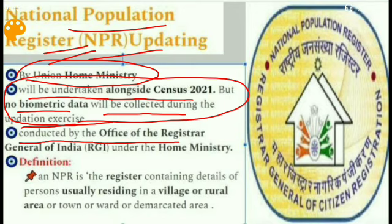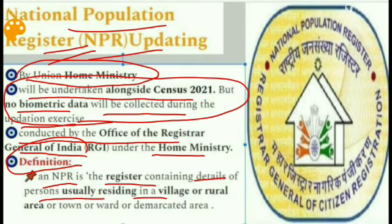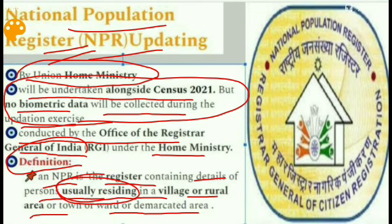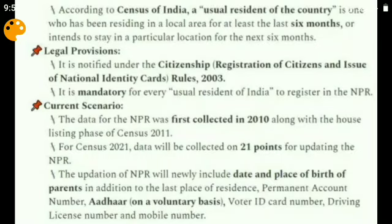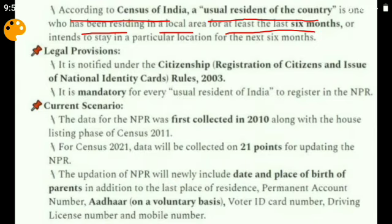The NPR is conducted by the Office of the Registrar General of India under the Home Ministry. It is defined as the register containing details of persons usually residing in a village, rural area, town, ward, or demarcated area. A 'usual resident' is someone staying for six months or wishing to stay for more than six months. According to the Census of India, a usual resident has been in a local area for at least the last six months or intends to stay for the next six months.